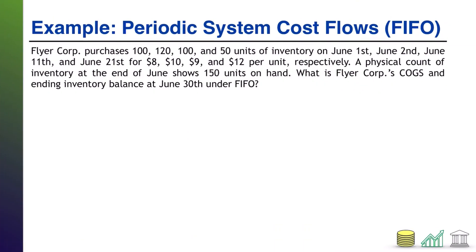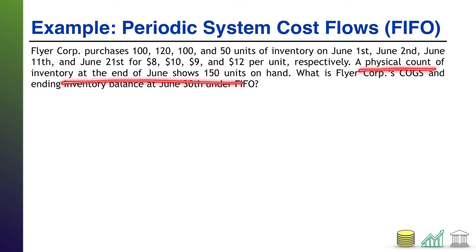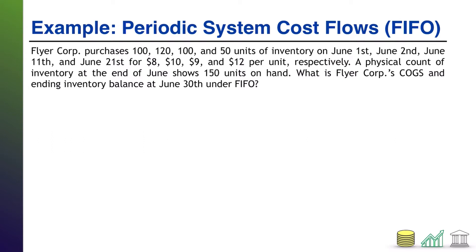So let's walk through an example — one FIFO, one LIFO, one average cost. We'll start off with FIFO. FlyerCore purchases 100, 120, and 150 units of inventory on these dates respectively, and it also gives you the prices respectively. A physical count at the end of June shows 150 units on hand. I always encourage students — whenever you see a problem like this where you're just given an information dump in paragraph form — it's definitely a lot easier to set up a chart that puts this information in a more readily usable form.